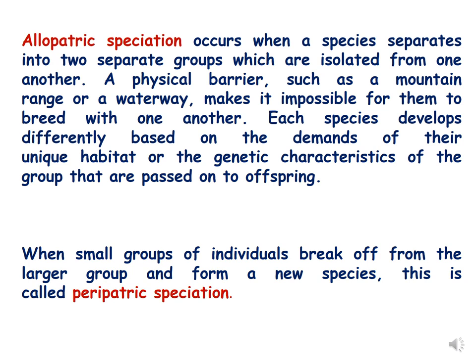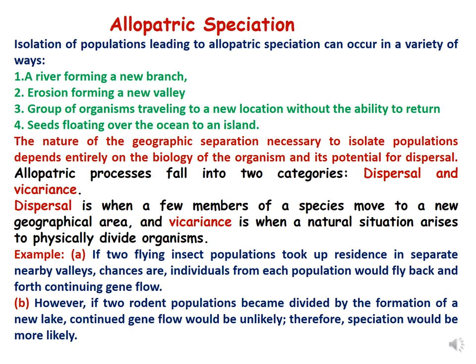When a small group of individuals breaks off from a large group and forms a new species, this is called peripatric speciation. Peripatric speciation also happens because of a physical barrier but at a smaller level than allopatric speciation. Allopatric speciation can happen due to four reasons: a river forming a new branch, erosion forming a new valley, a group of organisms traveling to a new location without ability to return, or seeds flowing over the ocean to an island. The nature of geographic separation necessary to isolate a population depends entirely on the biology of the organism and its potential for dispersal.